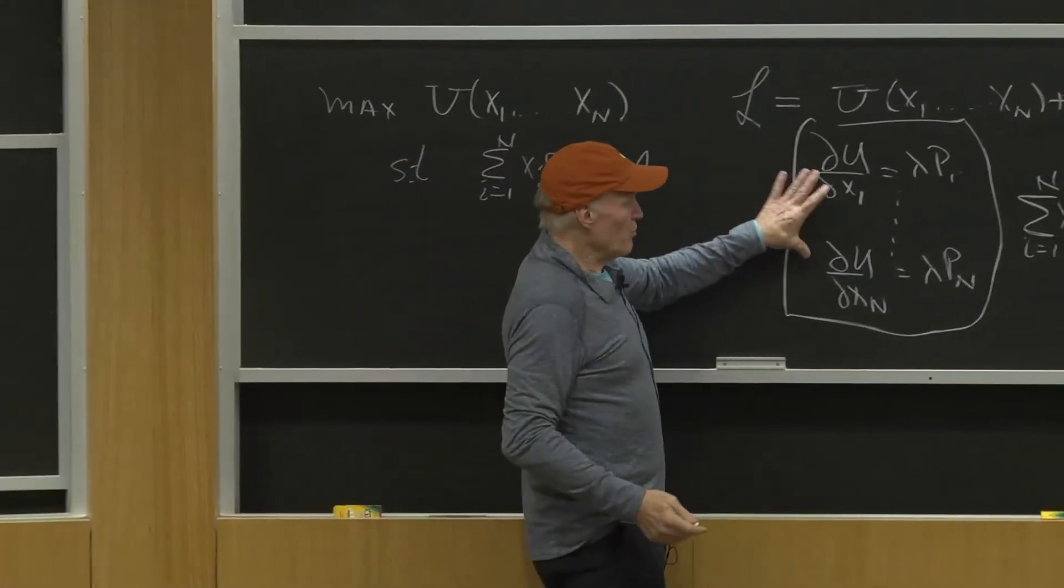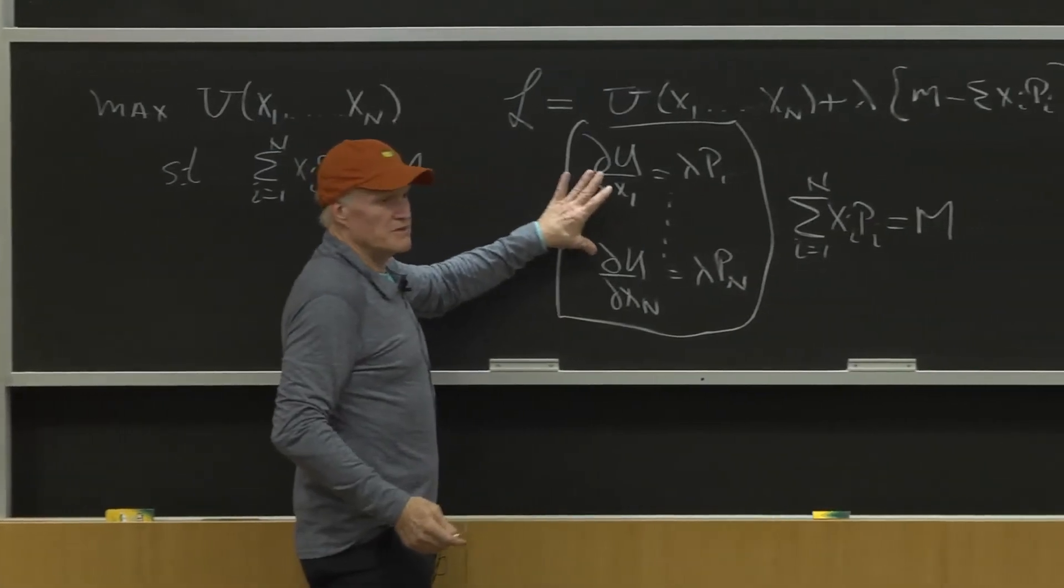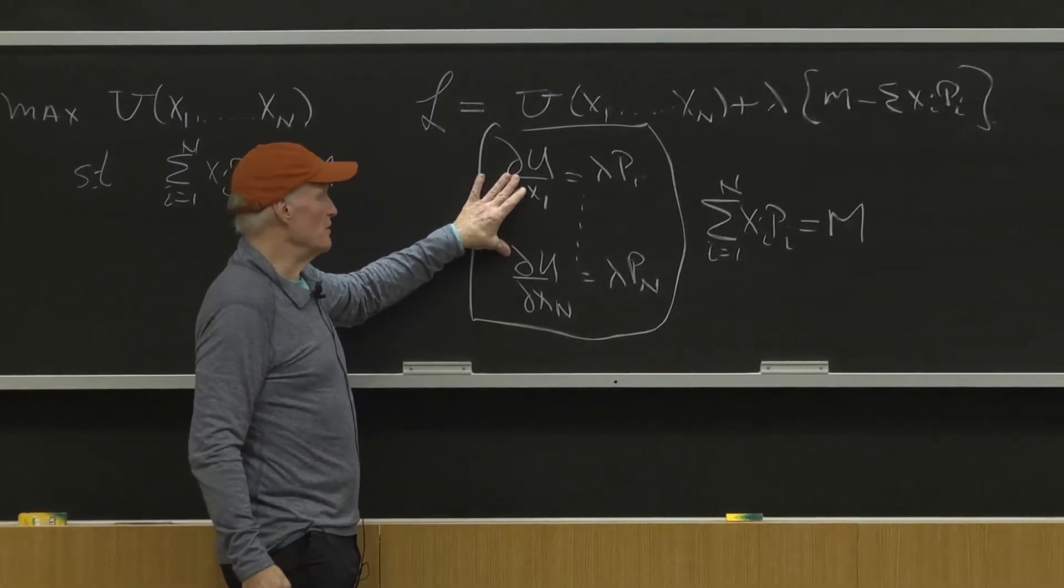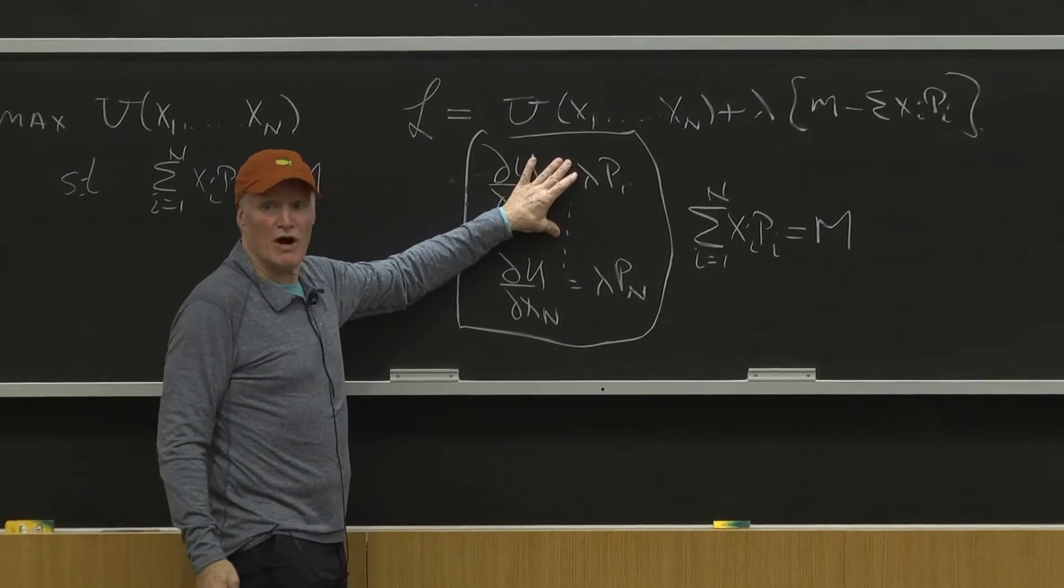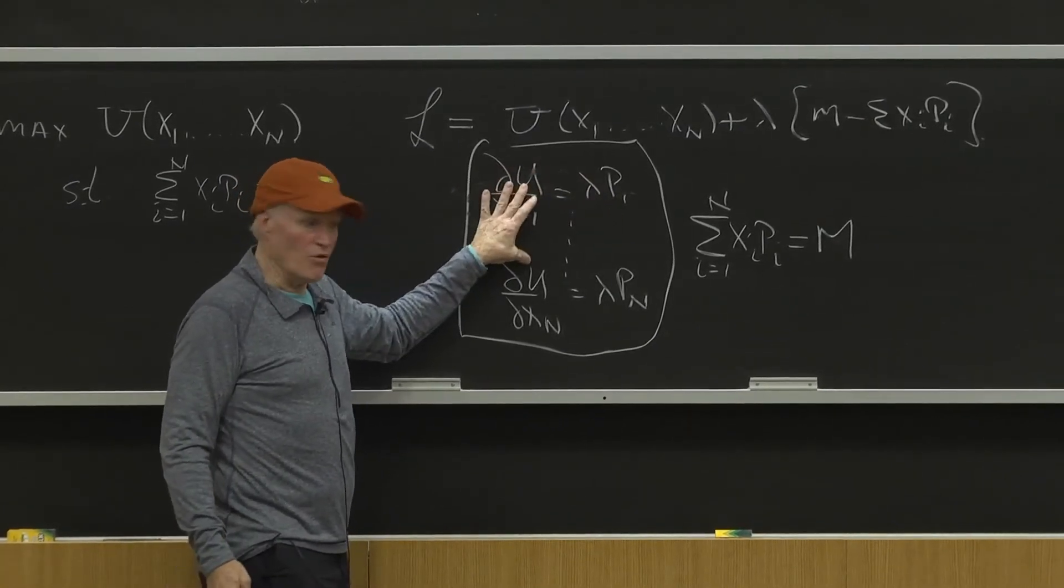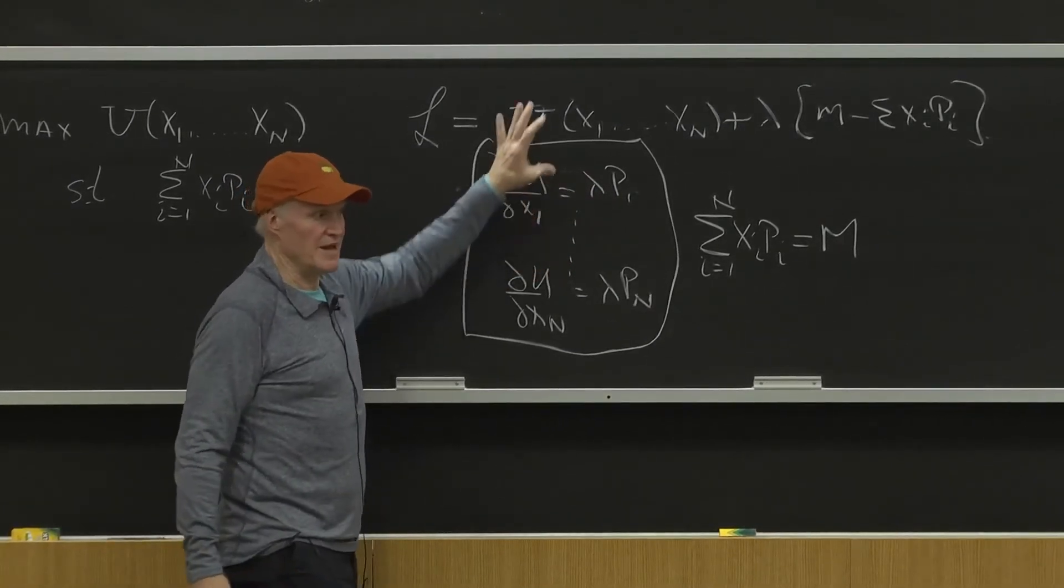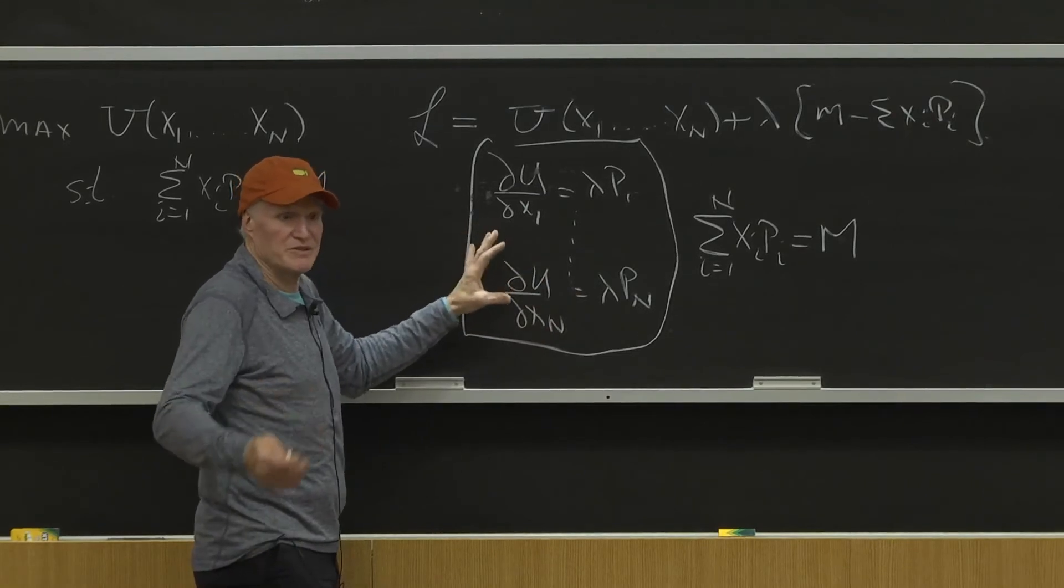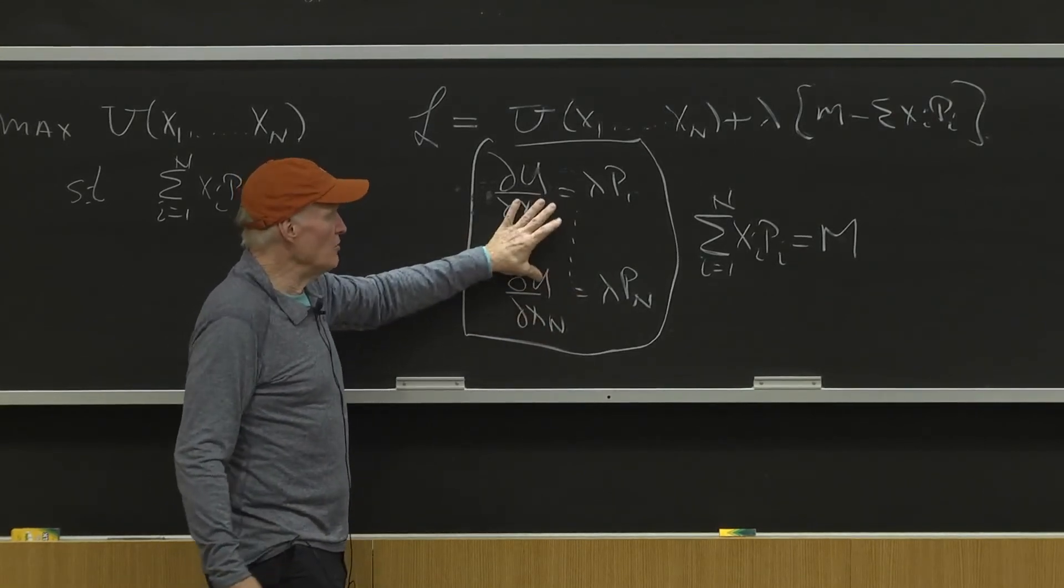Now this proportionality restriction comes down to, like we said before, some notion of marginal value equals marginal cost. Or utility per dollar being the same across all the goods—that's really the same statement. All those things, together with the budget constraint,